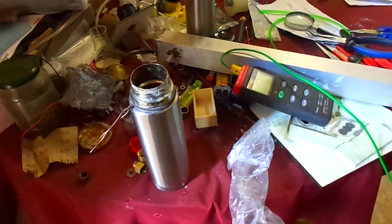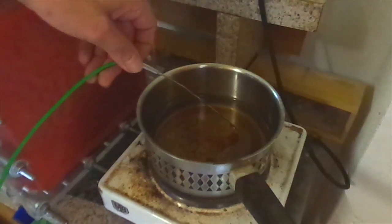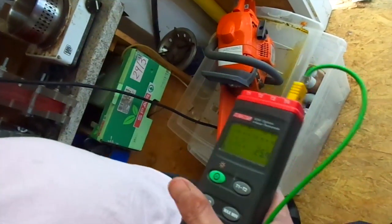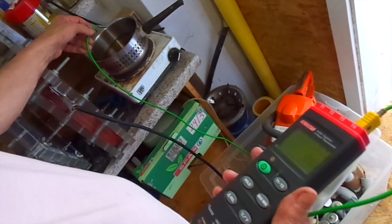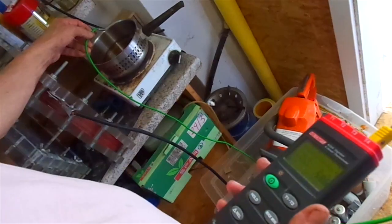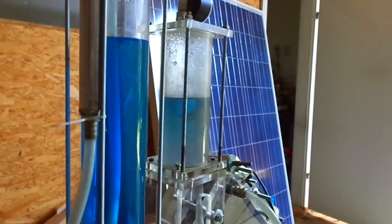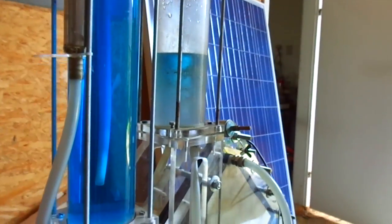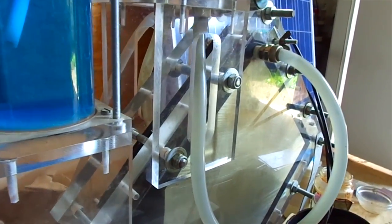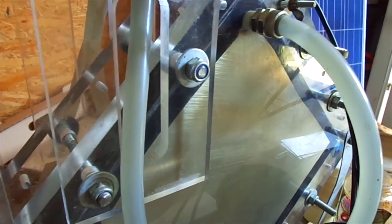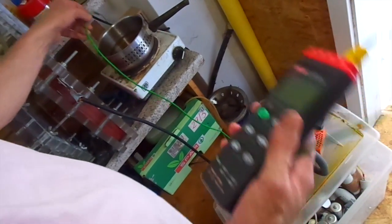The warmer the water, the more efficient it is. I heat up to a bit more than 60 degrees Celsius, because it will cool down anyway. It's just like the dry cell. You can't measure the efficiency when it is cold. So, we bring it up to operating temperature. 61 degrees Celsius, that's enough.